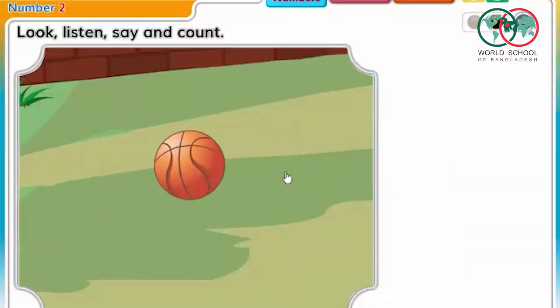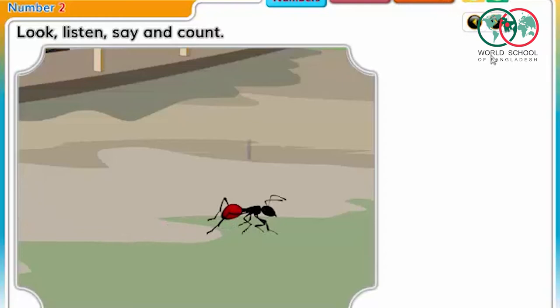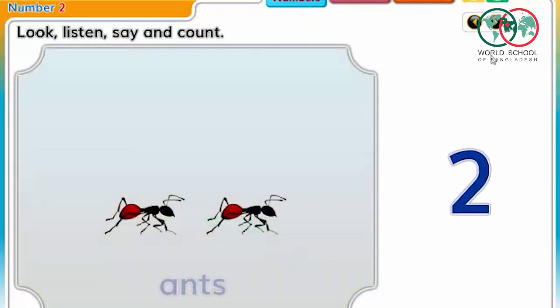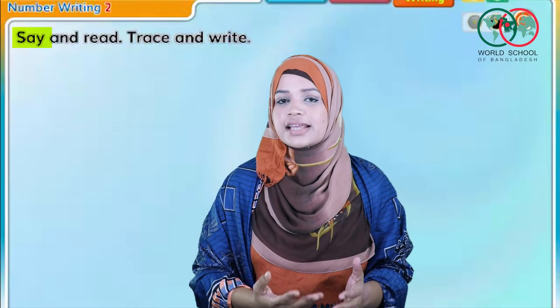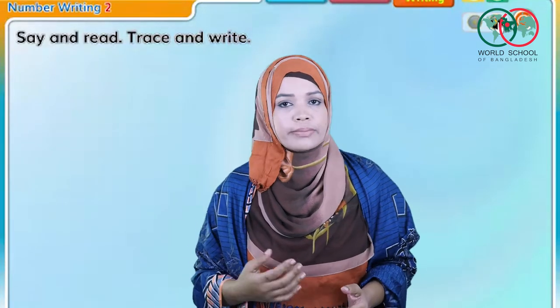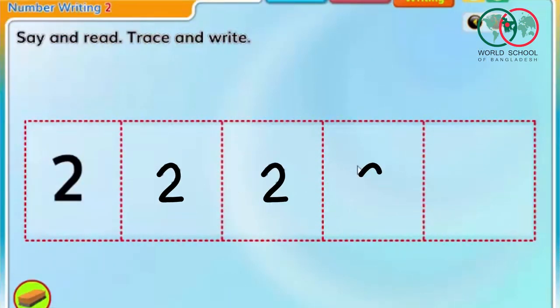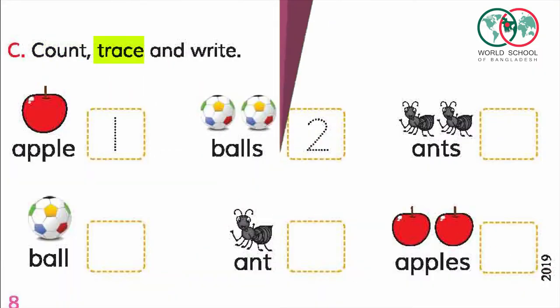We'll give you a BOL — what we call BOL. Let's call BOL. This is BOL. The BOL activity covers: say and read, trace and write, and say and read, trace and write, and say and write, count, trace and write — as much as you like.